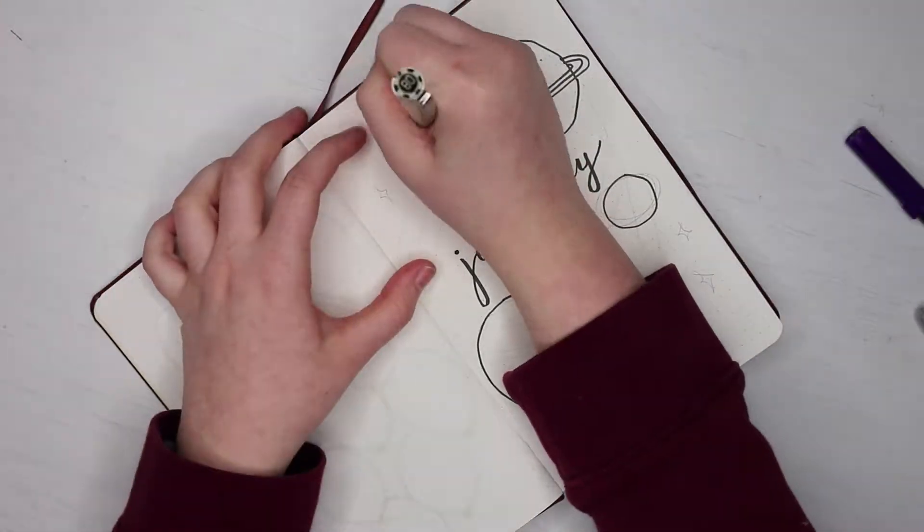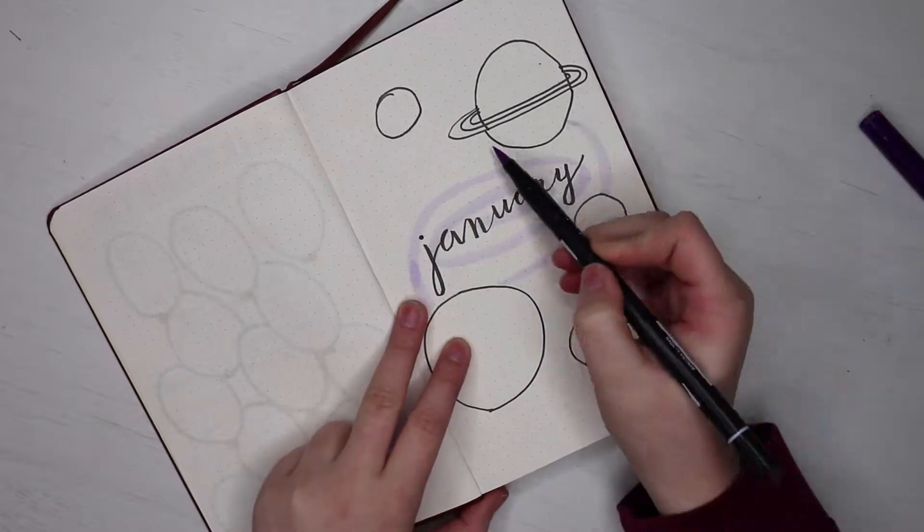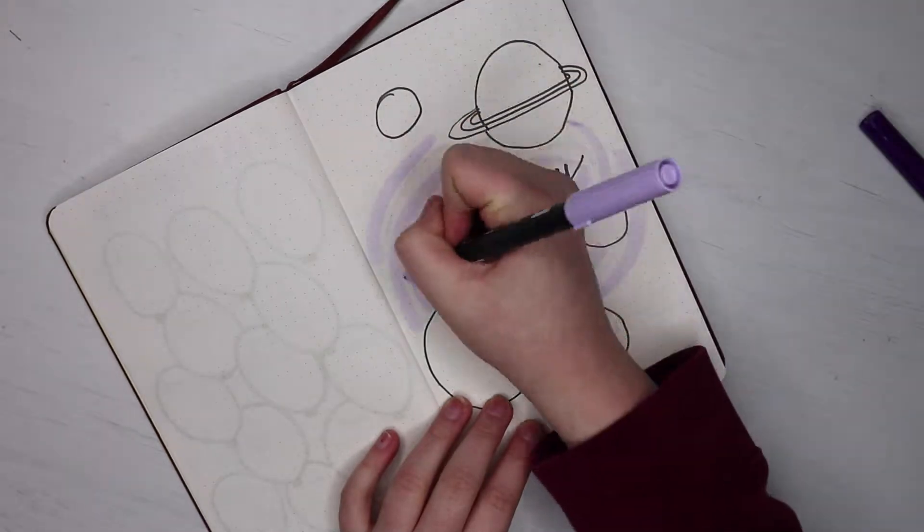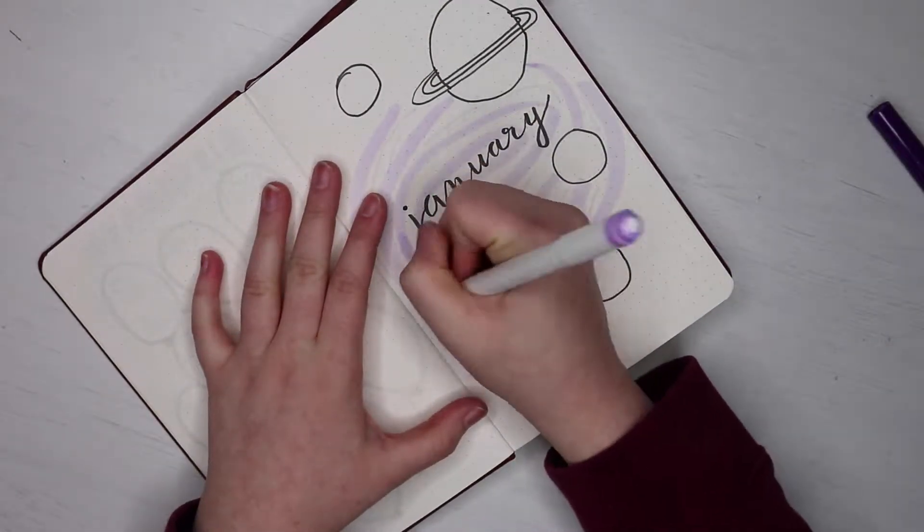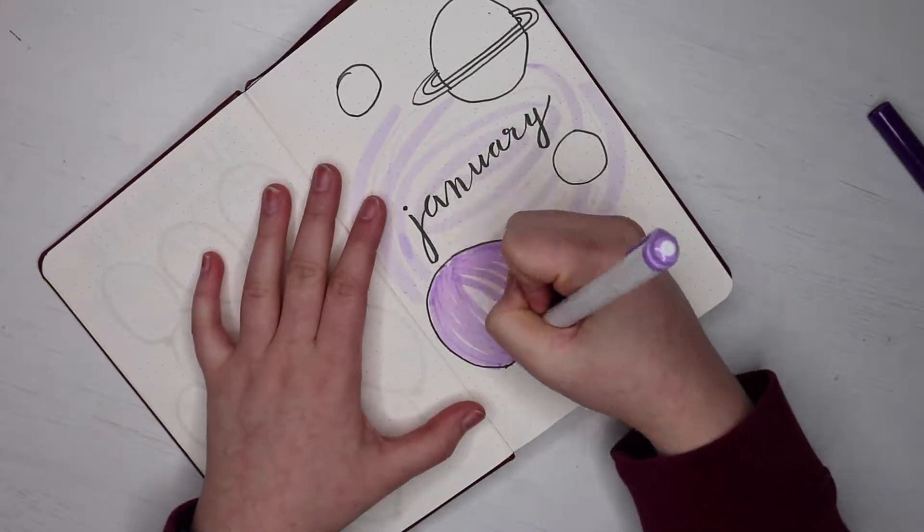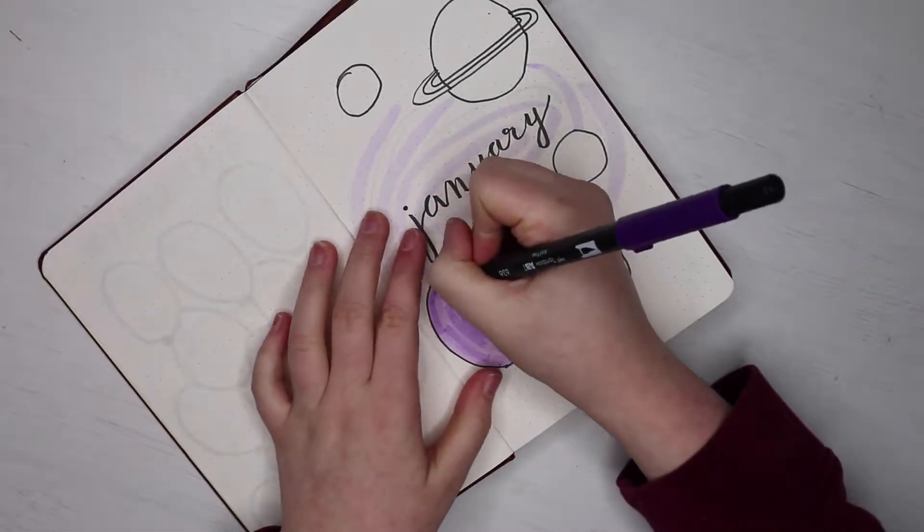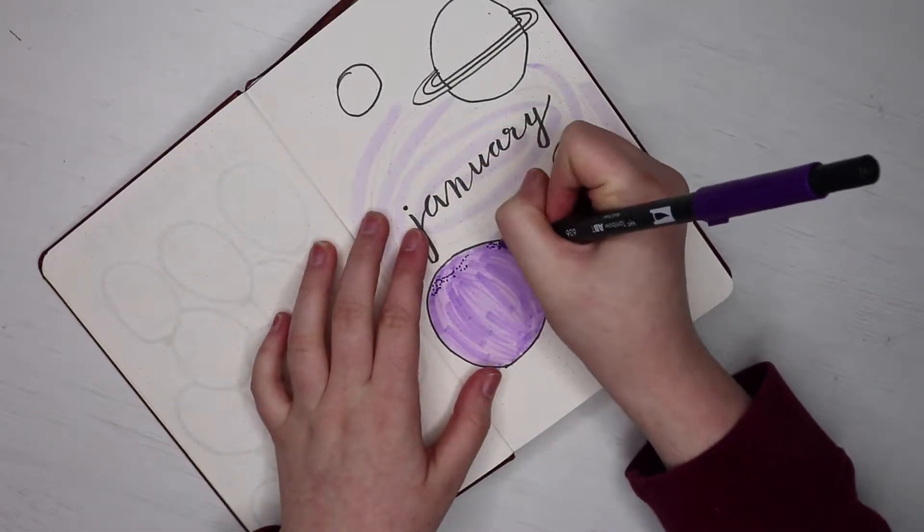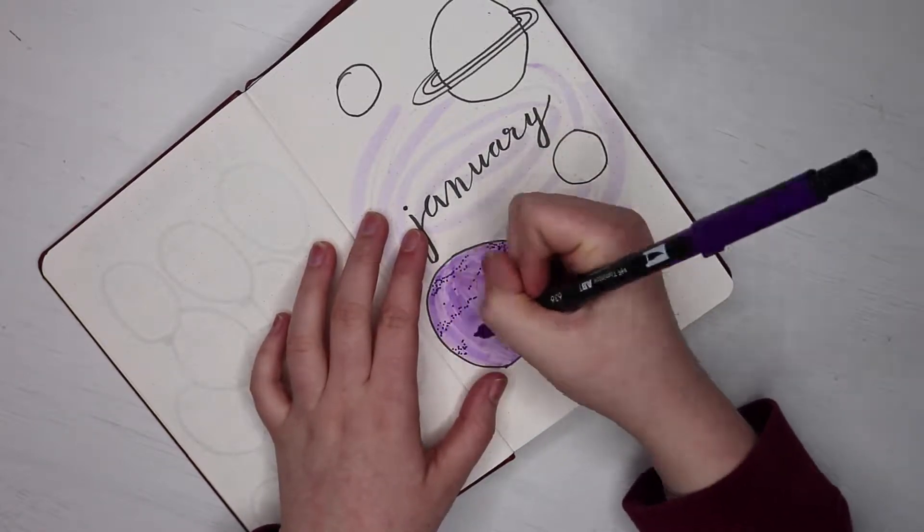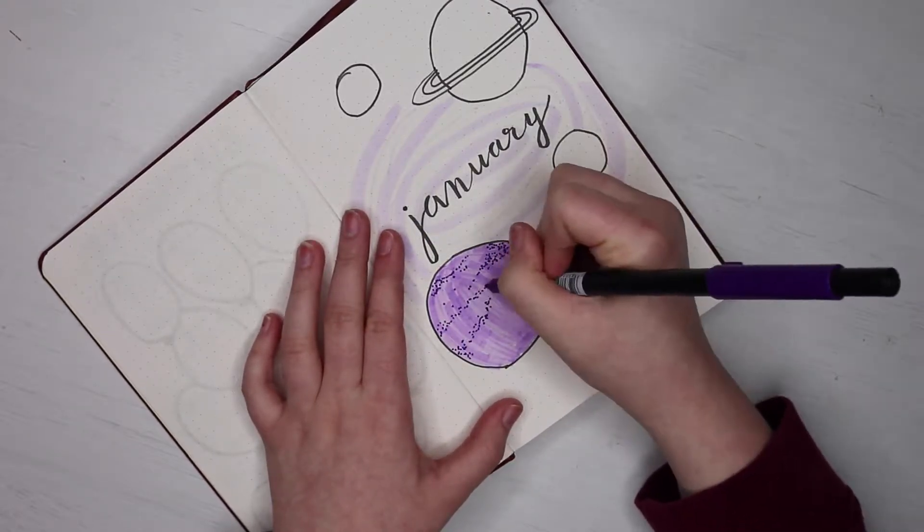And I'm pretty proud with how it turned out. So I'm just calligraphying January using a Tombow Fudenosuki, I think it was the hard tip. And then I'm taking a Tombow in the color 620, the light purple. And I'm kind of making like a galaxy type thing in the back of January. And then I'm just going to be coloring in the planets in different shades of purple using mild liners and Tombows. And then to kind of make them look more planet-y, I'm going to be filling them in with dots or lines.